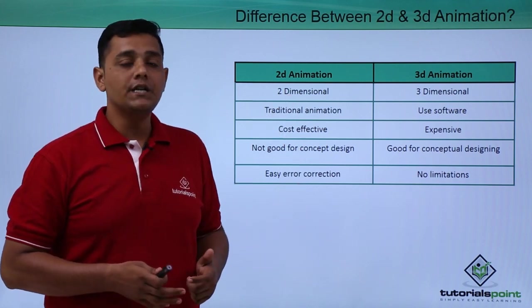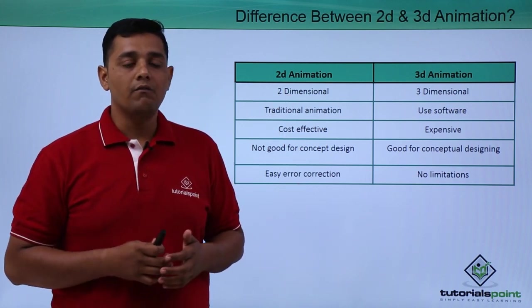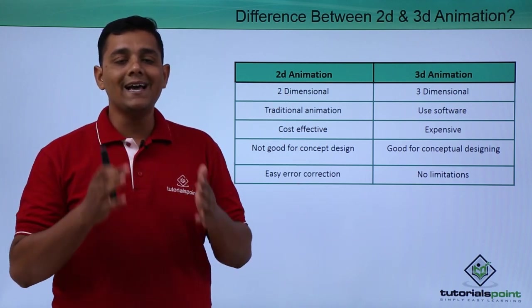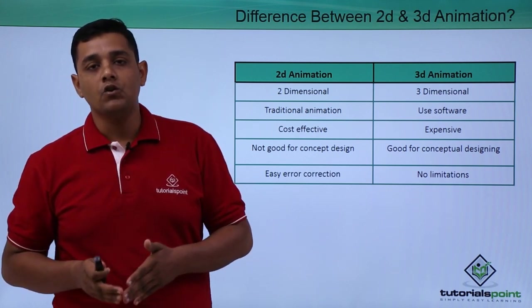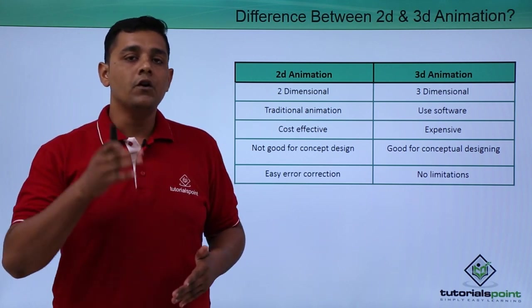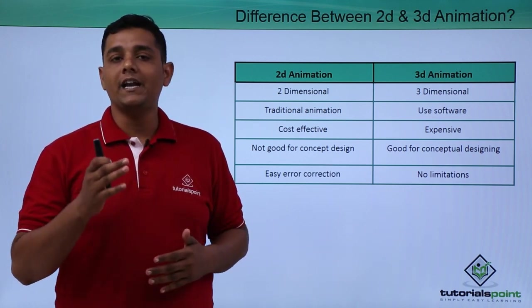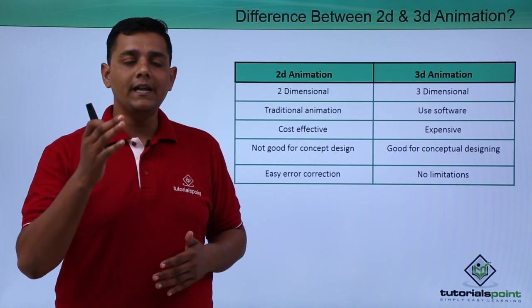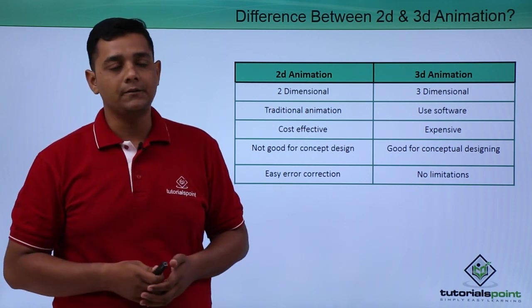2D animation is a two-dimensional animation where we provide only the x-axis and y-axis. So if an animator wants to create an animation in 2D, they only get width and height.